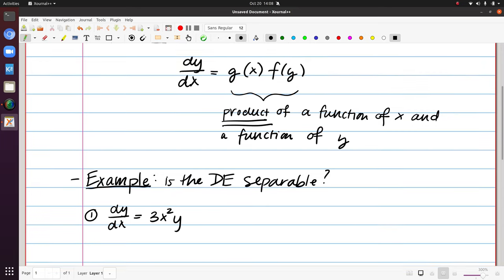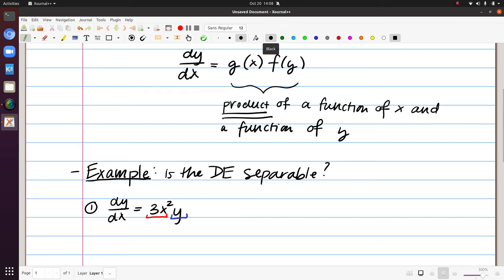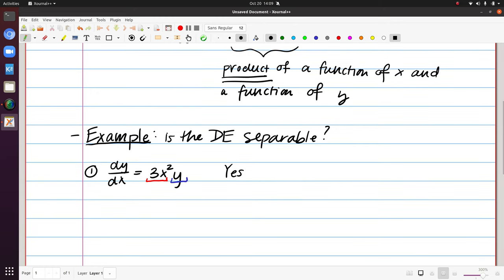Notice that right away I can see a product of a function of x and a function of y. One thing that we'll see here is that there's more than one way to break this up into a product of a function of x and a function of y. In particular that 3 multiplier could either stay with the x² or you could take it with y. So we'll have a choice and it won't matter when we're talking about constant multiples, but for now I can certainly say that this is definitely a separable differential equation.